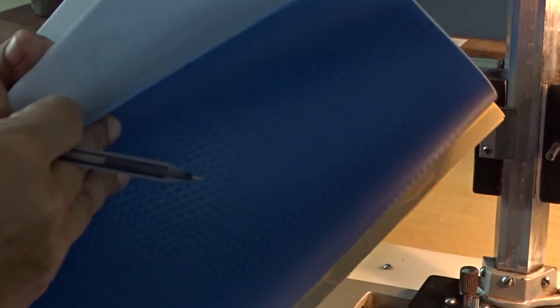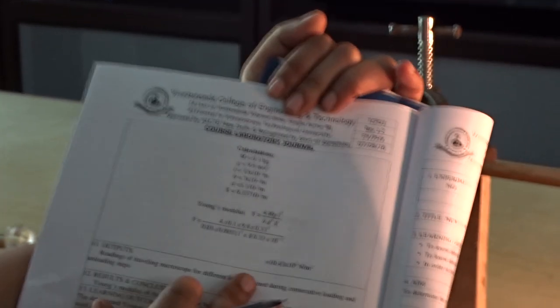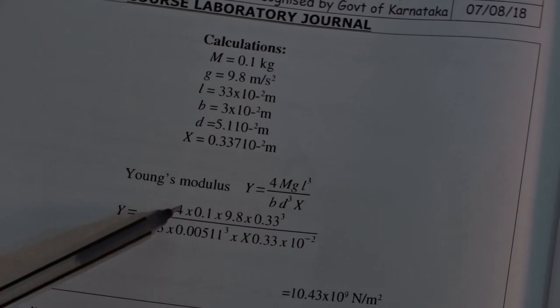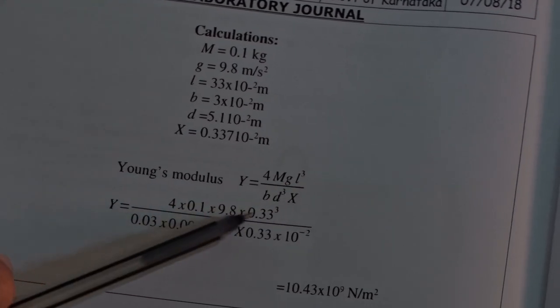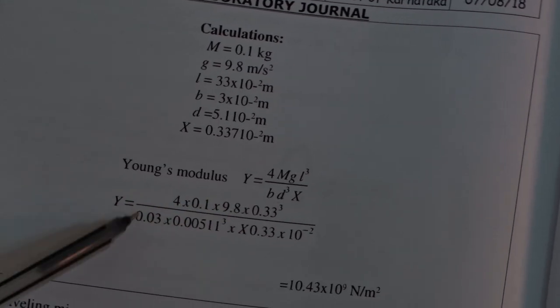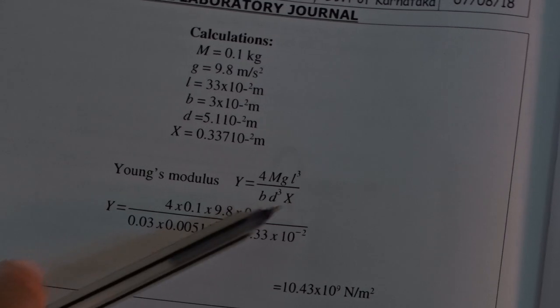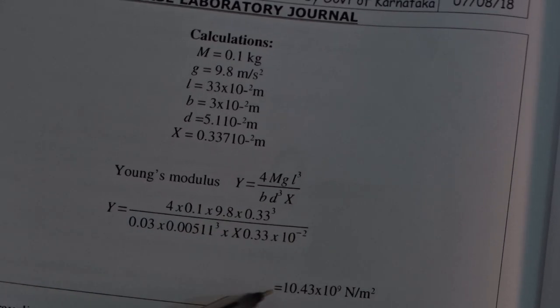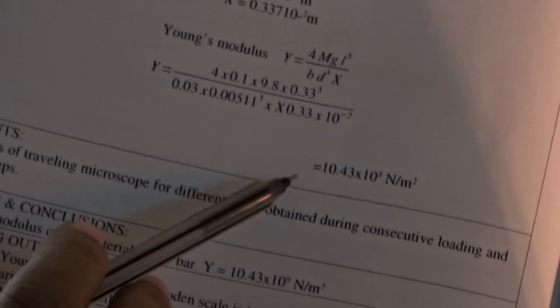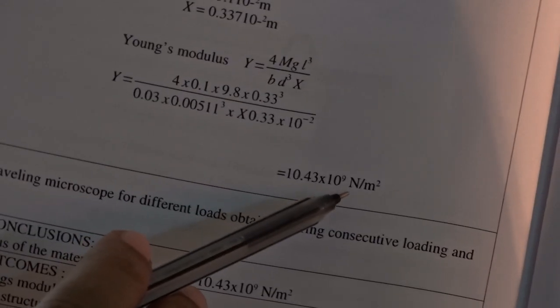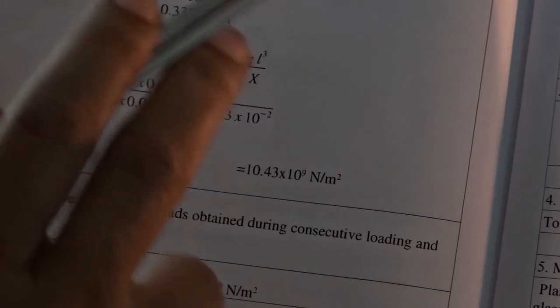Next, according to the aim of the experiment, we have to calculate Young's modulus. Young's modulus formula is given here. Y is equal to 4mg L cube divided by bd cube X. Substitute the values here. 4, m is mass 0.1, g is acceleration due to gravity 9.8, l is 0.33. Then, B and D, breadth and thickness, both are substituted here. Depression, 0.33 into 10 power minus 2. That is equal to 10.43 into 10 power 9 newton per meter square. It can be written as 10.43 giga Pascal, which is Young's modulus of this wooden scale.